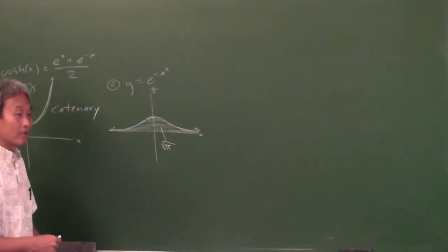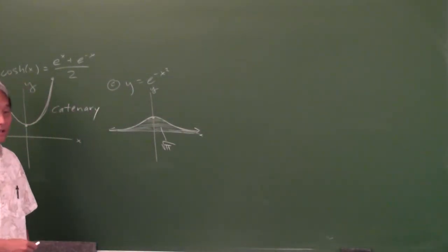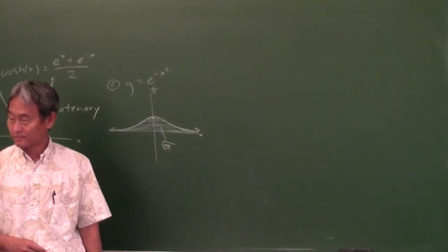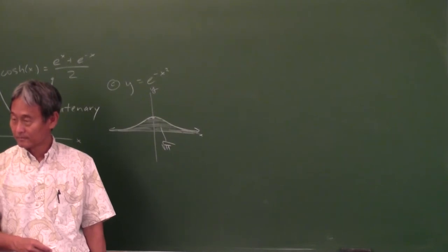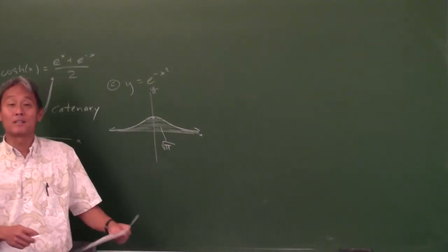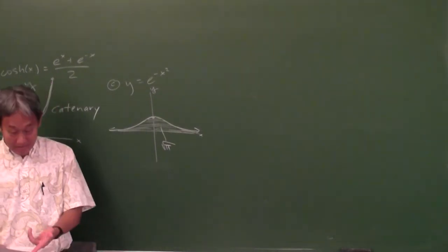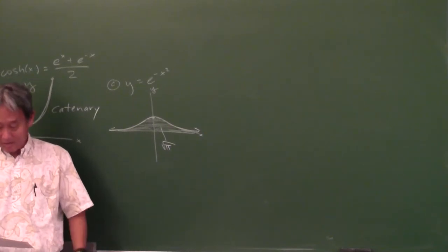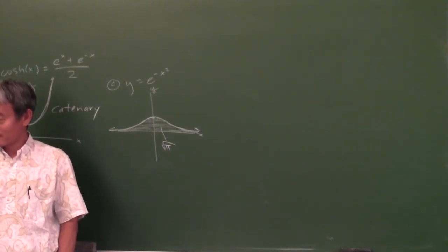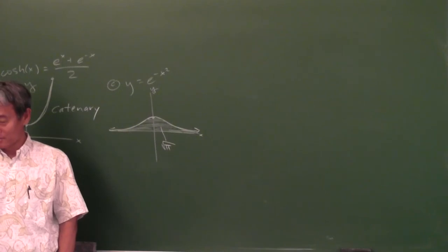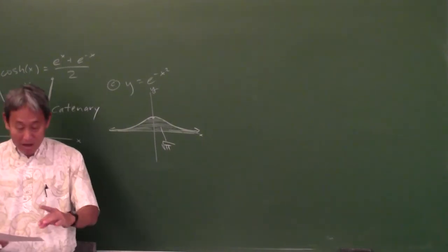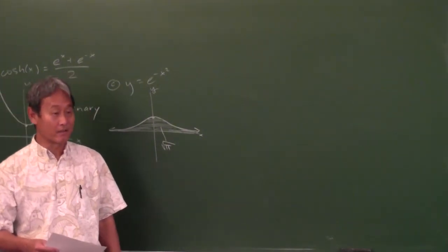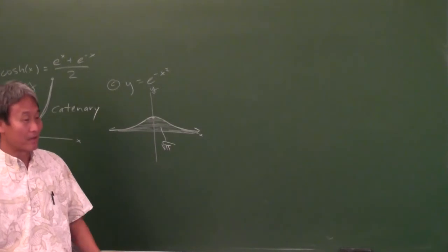What did the graph of D look like? Karamoro, you graphed it on your calculator, right? I don't see it up on the board. Just graph all four of these on your graphing calculator and copy it down on your paper.